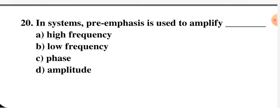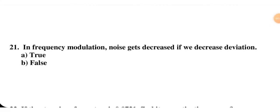In pre-emphasis, before transmission we amplify the low power signal — in this case the high frequency signal. So A is the correct option. Next question: in frequency modulation, noise gets decreased if we decrease deviation — true or false? This is false.